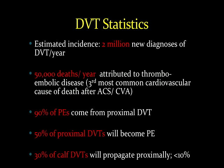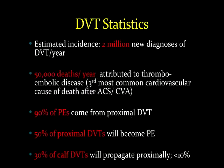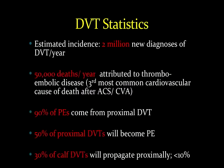A few key background statistics. In the United States, there's an estimated incidence of 2 million diagnoses of deep venous thrombosis per year, about 50,000 of which result in death. 90% of pulmonary emboli, which are the most common cause of death from deep venous thrombosis, come from proximal deep venous thrombosis, those proximal to the knee. About half of all proximal DVTs will become pulmonary emboli. About 30% of calf or distal DVTs will ultimately propagate to become proximal and therefore increase in risk of pulmonary embolus.